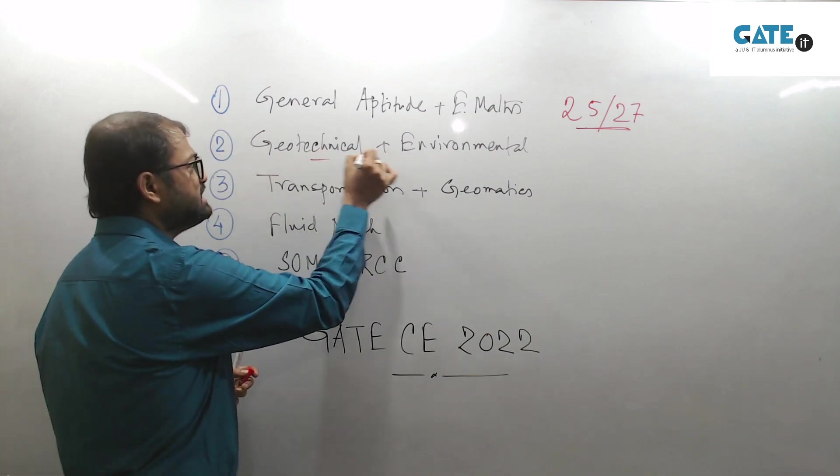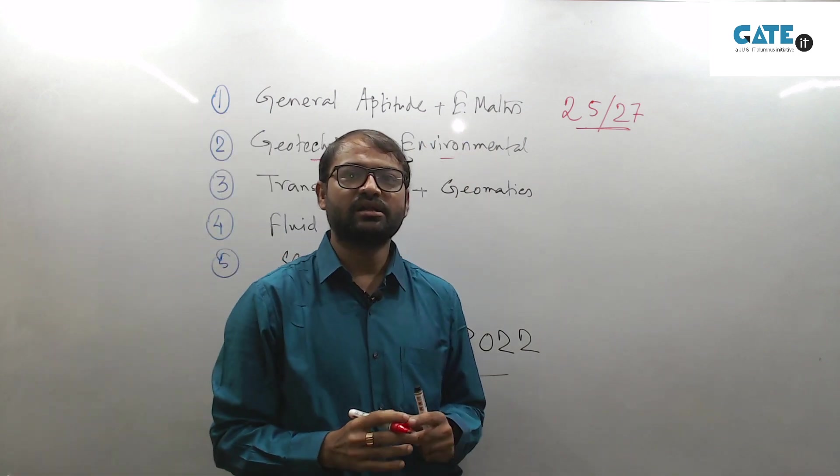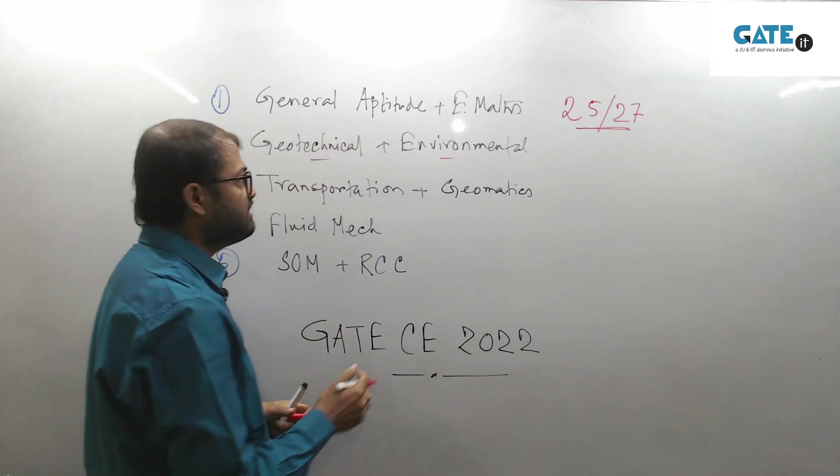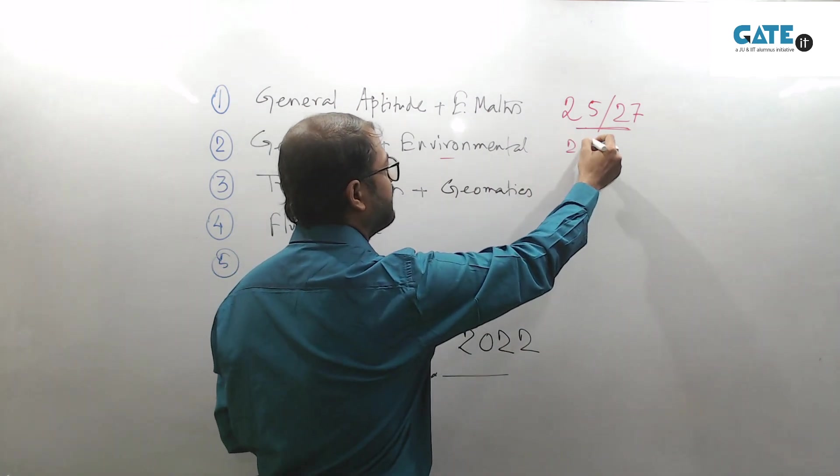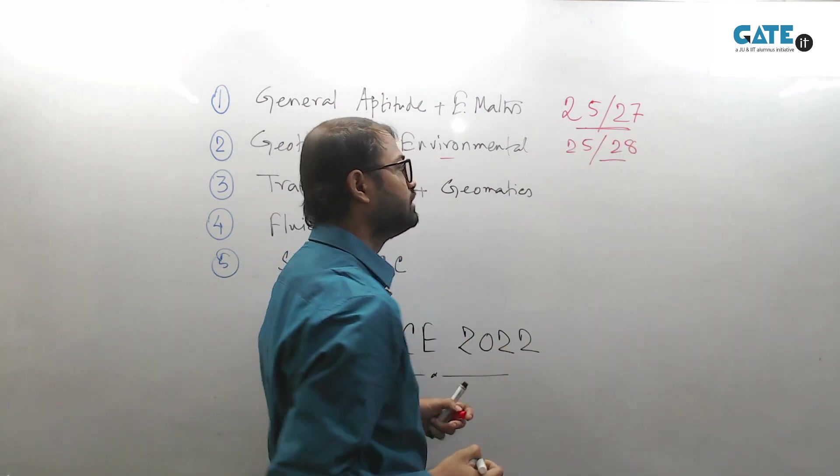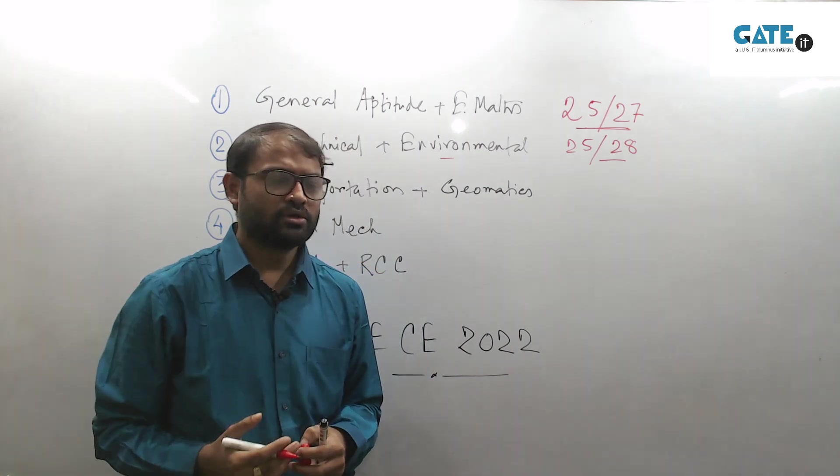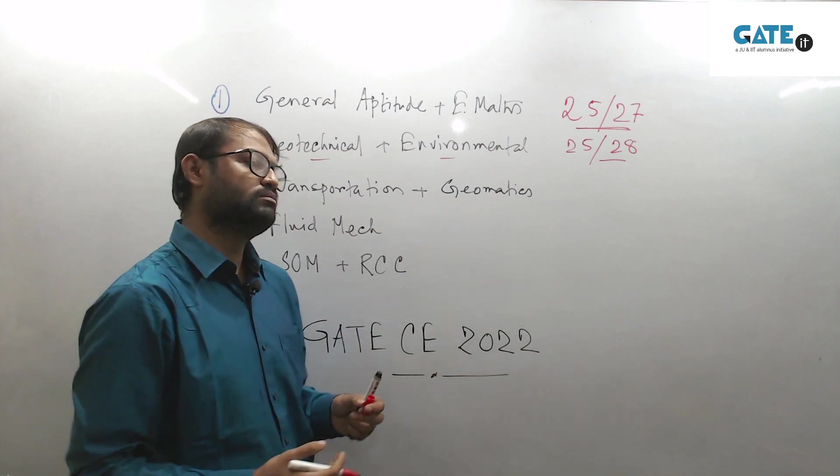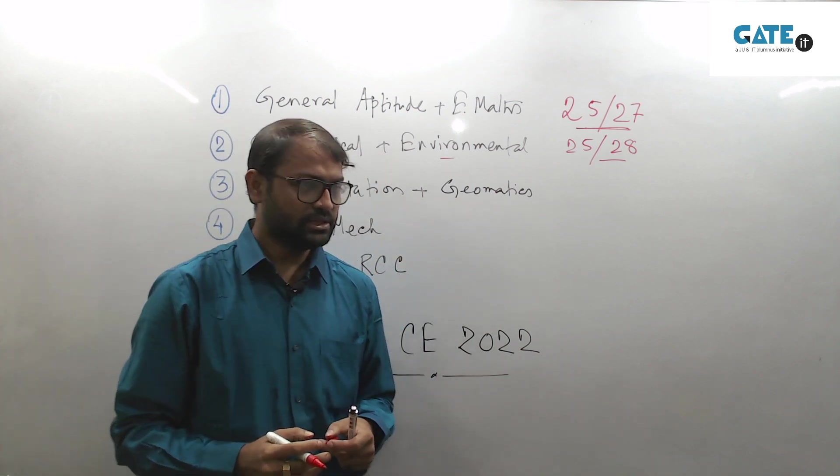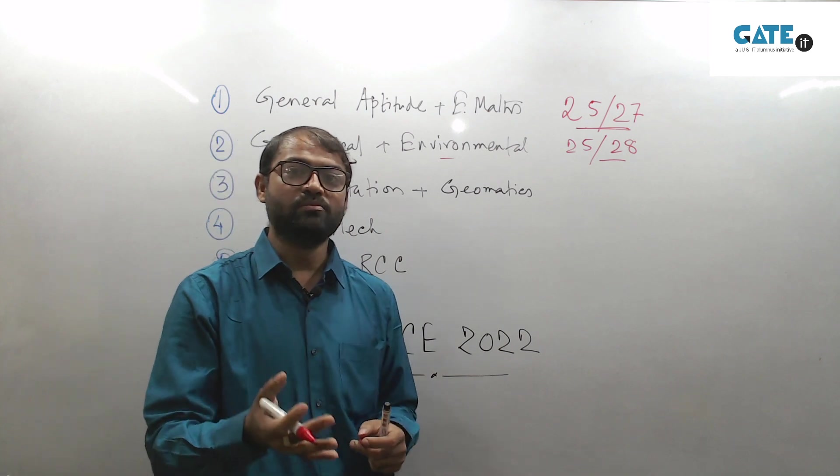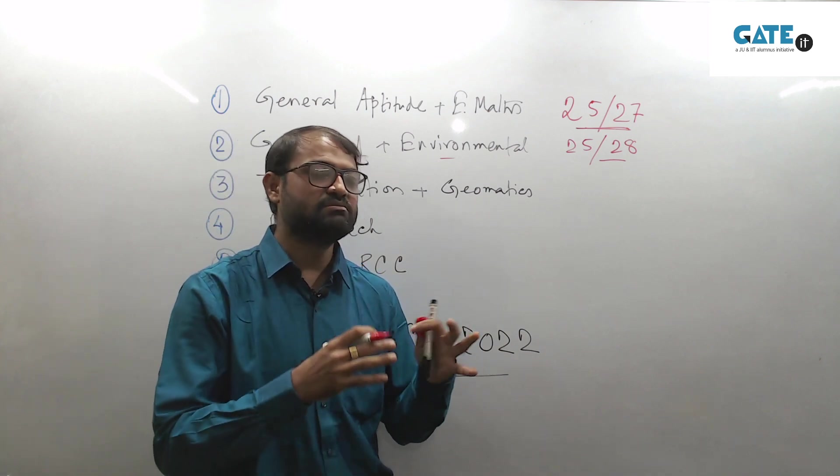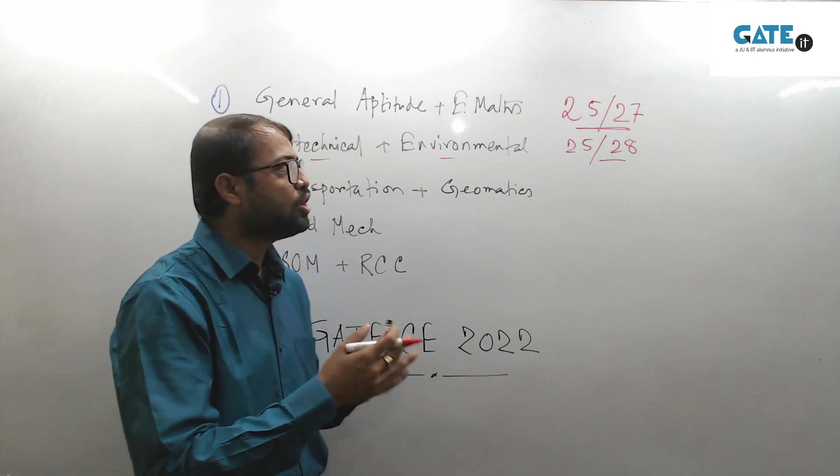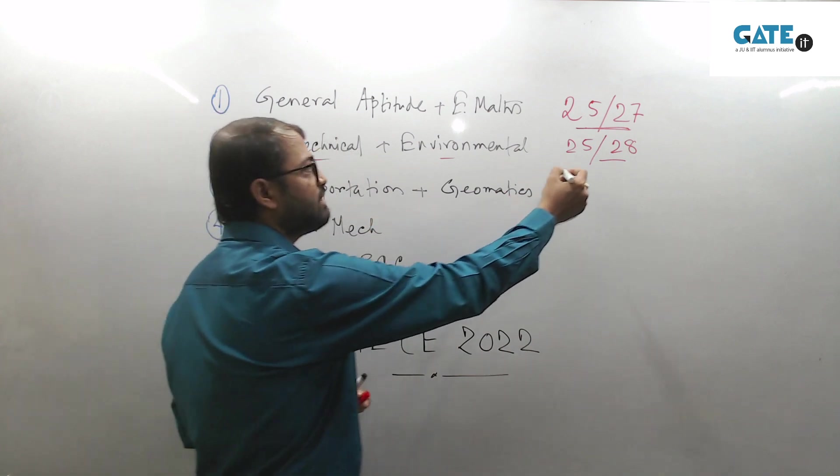Second part: geotechnical engineering and environmental engineering. They are the most important two subjects for civil engineering GATE, and from here you can expect marks ranging 25 to 28 even. For past few years, the observation is that from geotechnical engineering you can expect 15 marks or maybe more. Sometimes it has come 16 to 18 marks even. Environmental engineering typically ranges from 10 to 11. So altogether you can get 25 to 28 marks.